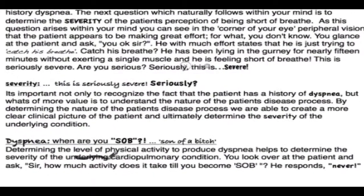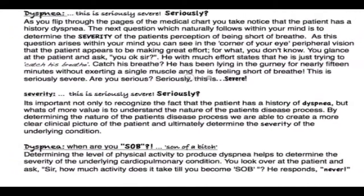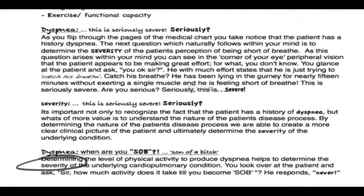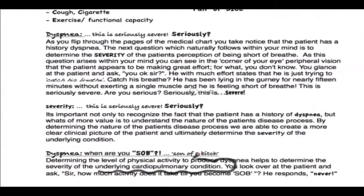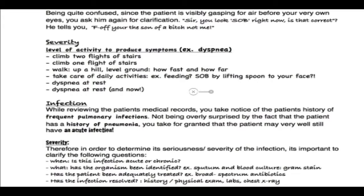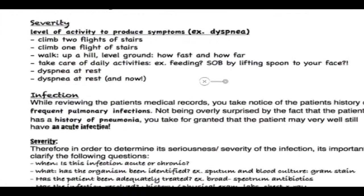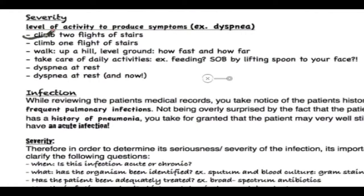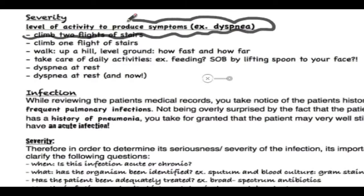Determining the level of physical activity required to produce dyspnea helps to determine the severity of the underlying cardiopulmonary condition. Therefore, as you obtain a thorough history of the patient, it's important to ask questions pertaining to the level of activity needed to produce the symptoms of dyspnea.